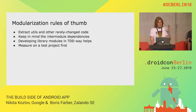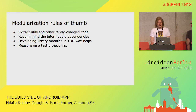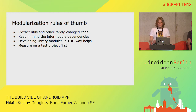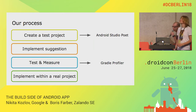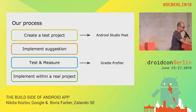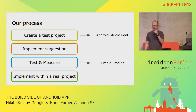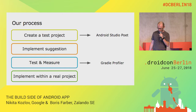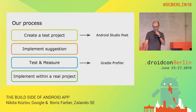Please measure on the test project first, because in test projects it's much easier to track issues and fix them. For example, we didn't cover things like flavors and other things that can really impact your build, because there are a lot of variables. To recap our process: create a test project, implement a suggestion, test and measure using Gradle Profiler, and finally, if you are happy with the outcome, implement it within a real project.